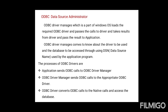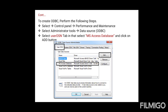The steps are: first, select the Start button, then select Control Panel. Once you click Control Panel, select Performance and Maintenance, then Administrative Tools, and in that select Data Sources (ODBC). When you double-click on Data Sources (ODBC), the ODBC Data Source Administrator dialog box will appear.